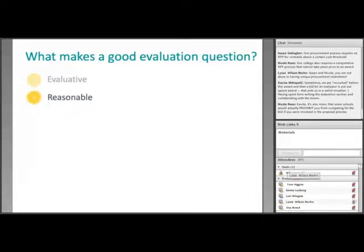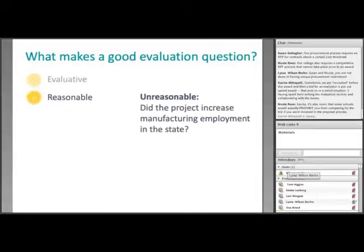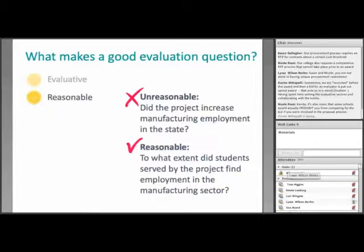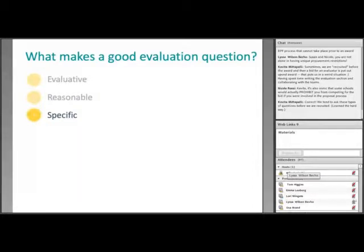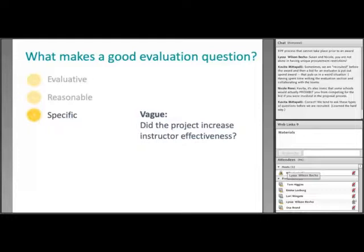Second, good evaluation questions should be reasonable — linked to what the program can practically achieve or influence. Asking whether the project increased manufacturing employment across an entire state may be unreasonable given time and resources. Instead, ask: to what extent did students served by the project find employment in the manufacturing sector? Third, good evaluation questions should be specific. Vague questions like 'did the project increase instructor effectiveness?' introduce unnecessary confusion — we should instead ask: to what extent did participating instructors increase their knowledge about nanotechnology?